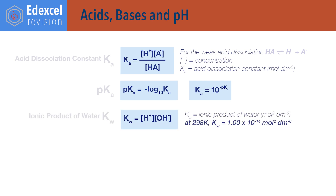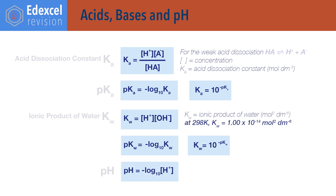Kw equals concentration of H plus times concentration of OH minus. Kw is the ionic product of water and has a value of 1 times 10 to the minus 14 at 298 kelvin. pKw equals minus log to the base 10 of Kw, and Kw equals 10 to the minus pKw. pH equals minus log to the base 10 of concentration of H plus ions, and concentration of H plus ions equals 10 to the power minus pH.